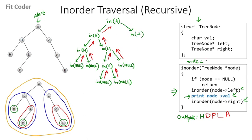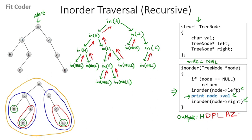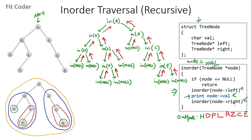We call in-order for Z. Node is Z — we check if null, then call in-order for left of Z which is null, so we return. We print Z, then call in-order for right of Z, which is C. Node becomes C — we call in-order for left of C which is null and return. We print C, then call right of C which is E. Node becomes E — we call left of E which is null and return. We print E, then call right of E which is also null and return. We return from E to C, from C to Z, from Z to A. The recursion terminates and this is our in-order traversal.